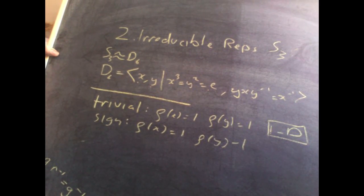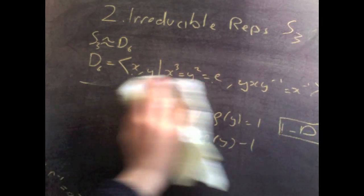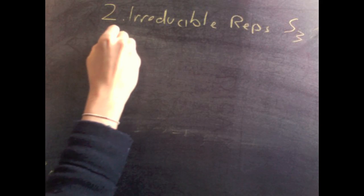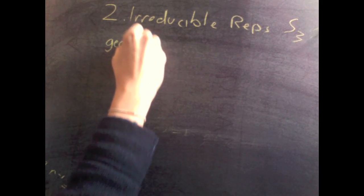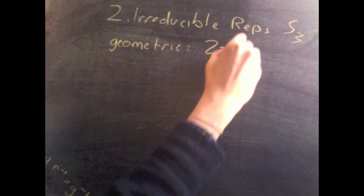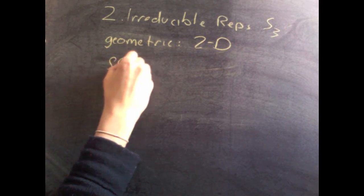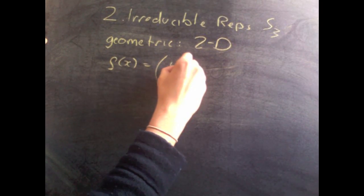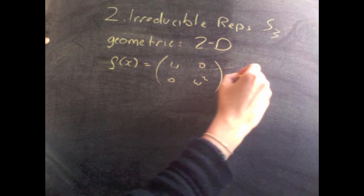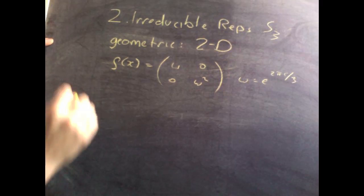And now there's just one more irreducible representation of S3, which is geometric. This is a two-dimensional representation. This is defined on the two elements as follows. Rho X is given by omega 0, 0 omega squared, where omega is e to the 2 pi i over 3, a cube root of unity.